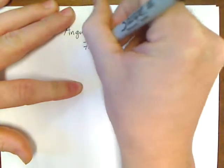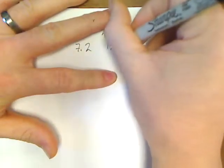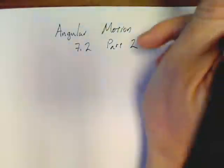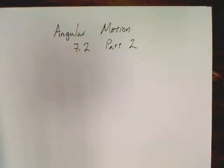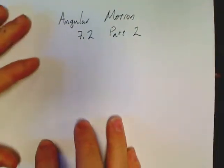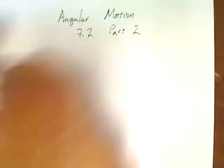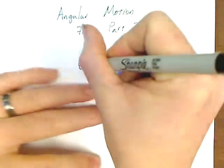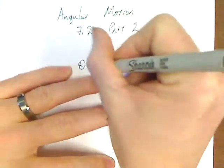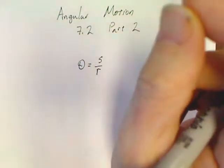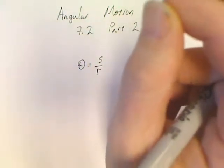Angular motion 7.2 part 2 is where we're at. I just want to take one second and run back through every equation you need so far in chapter 7. If we go right back to the beginning, first equation is just theta equals s over r.